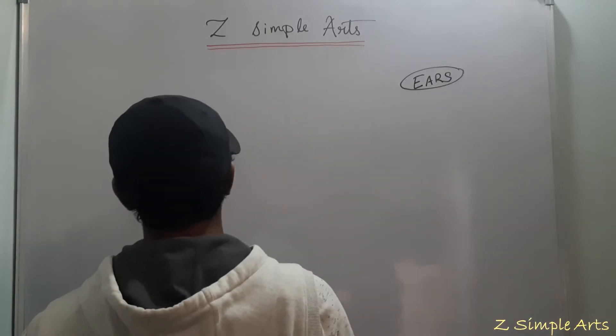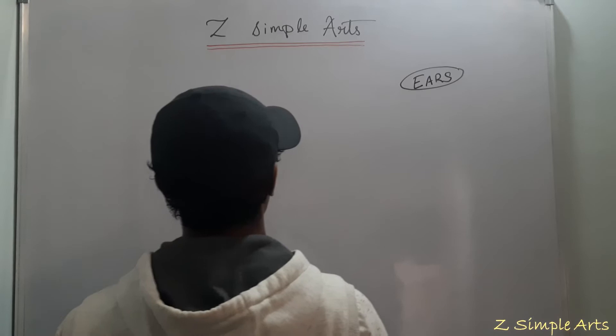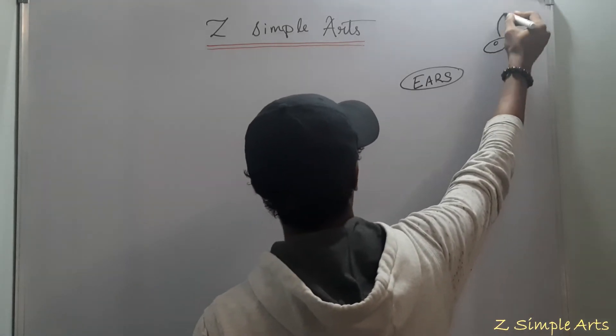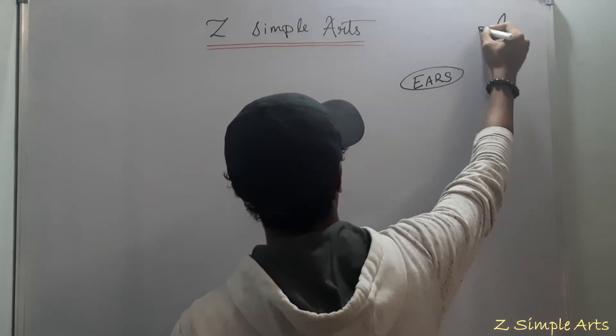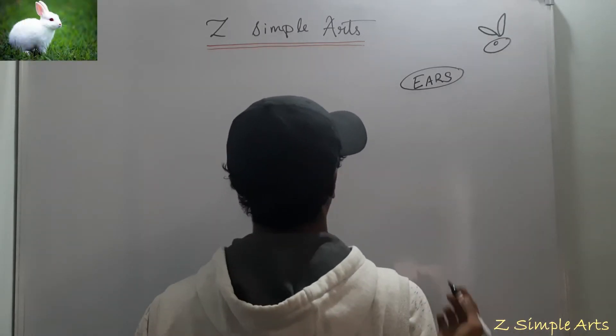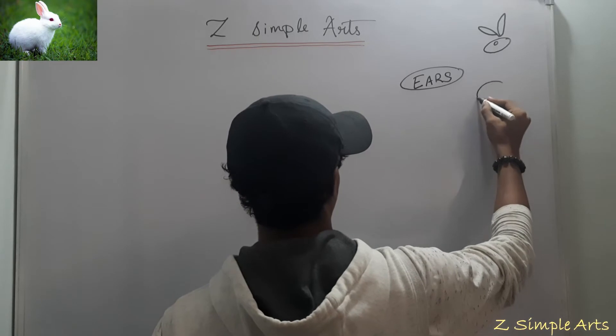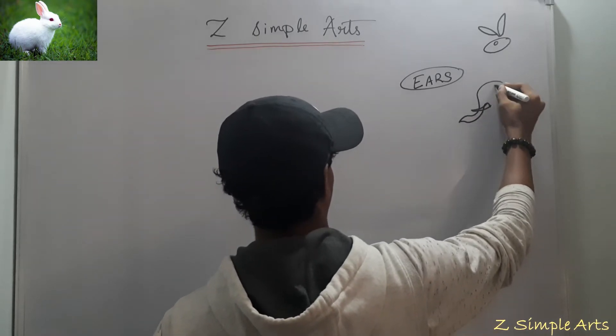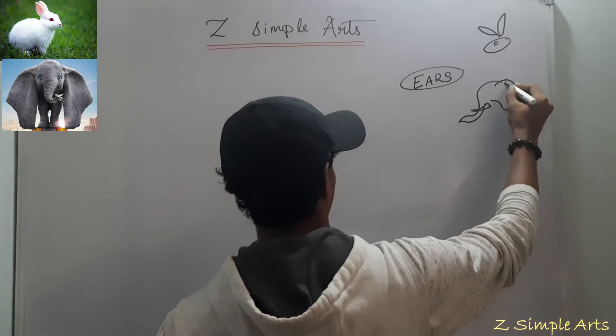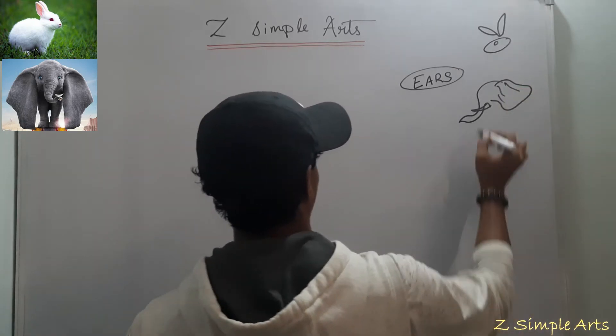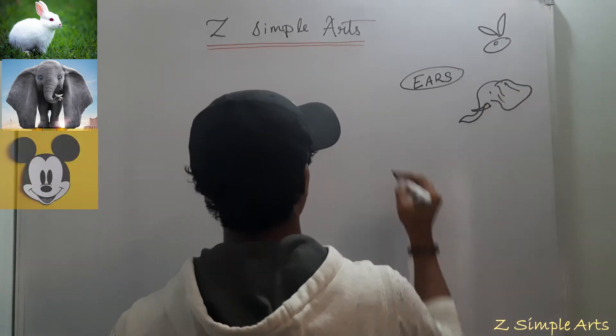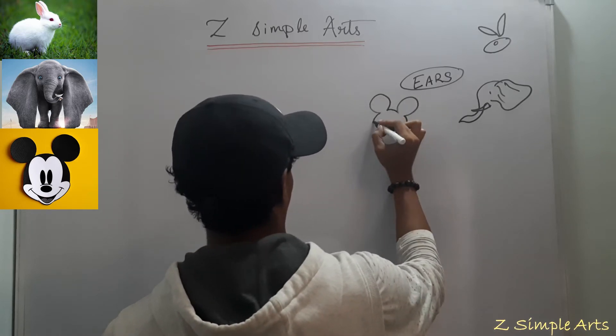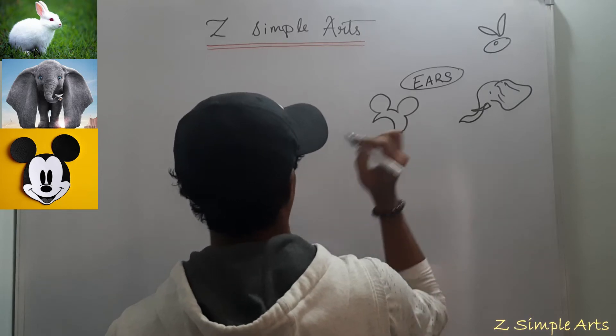What is so intriguing about ears? Obviously, various animals have various types of ears. The rabbit has long ears. Elephant has wide ears. And Mickey Mouse, as you know, has this sort of ears.